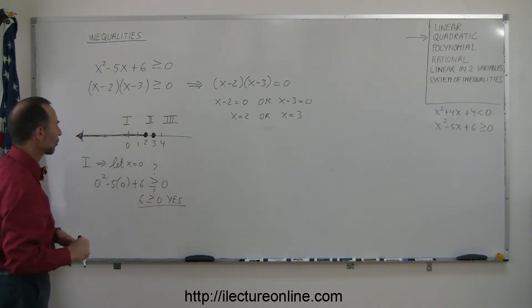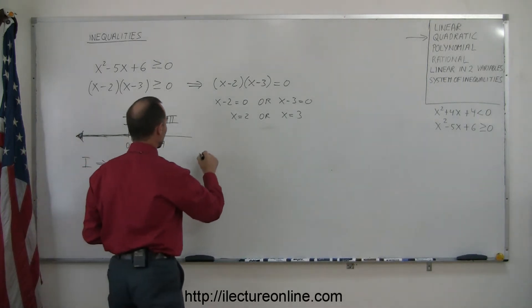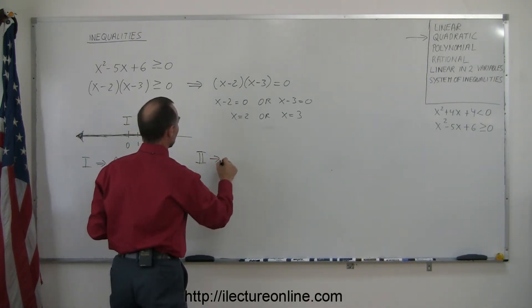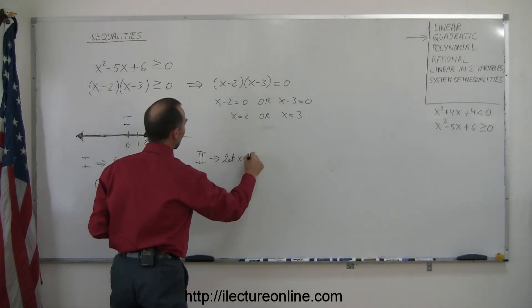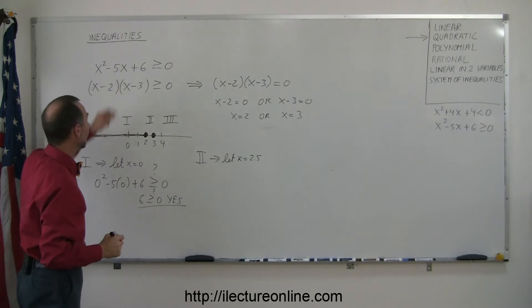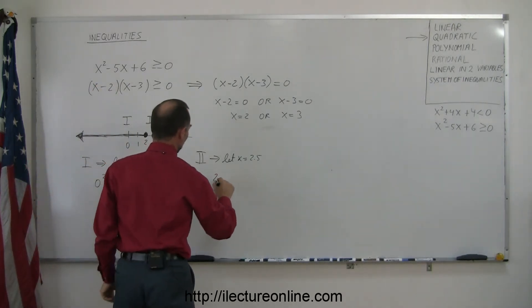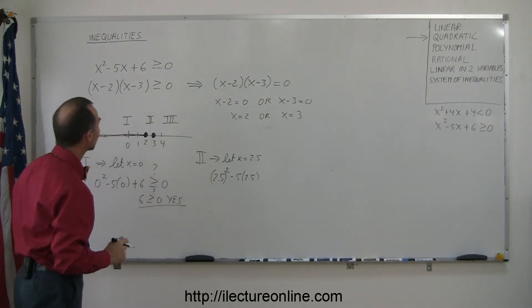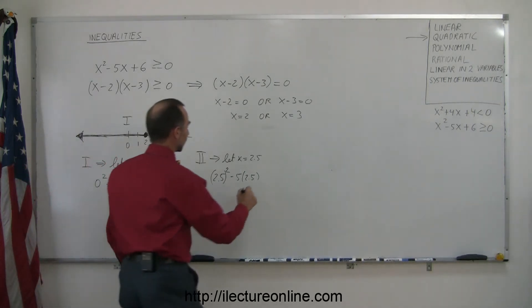How about the region between 2 and 3? So let's try a test point. Region number 2, let x equal 2.5. If we plug that into our inequality, what do we get? We get 2.5² - 5(2.5), sometimes it's better to put parentheses around it so it looks a little bit clearer what you're trying to do, plus 6.